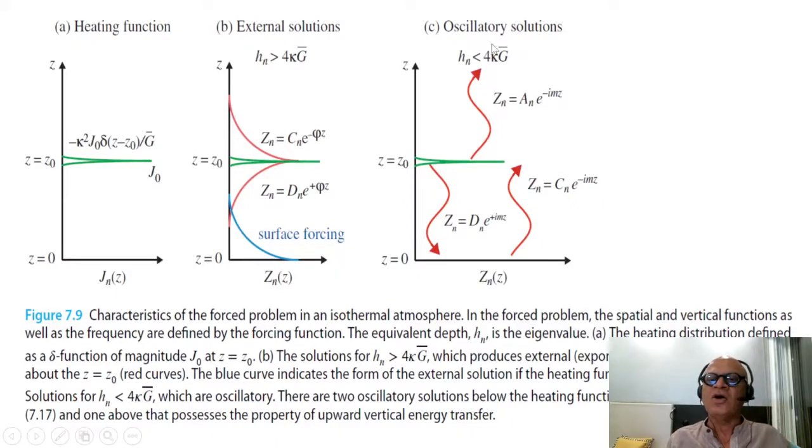Oscillatory solutions are obtained when Hn is less than 4 kappa G-bar. So you see one wave propagating up with this structure, that's the vertical wave number, and this is two waves down, so one coming down, one getting reflected from the surface.